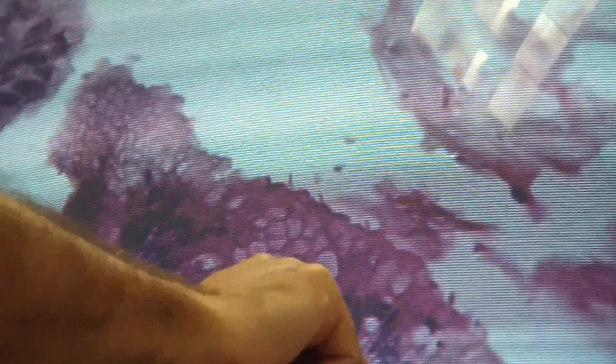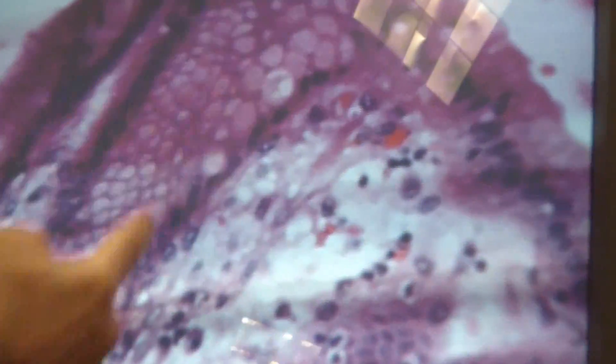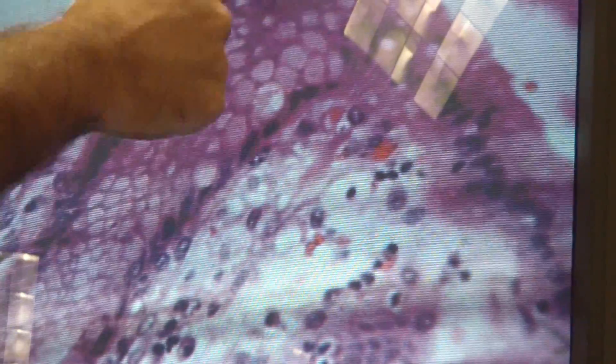See that? Because we said starting from the stomach we see simple columnar. So again, all of these are simple columnar cells and these are the gastric pits.